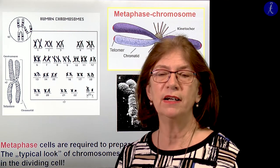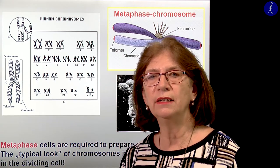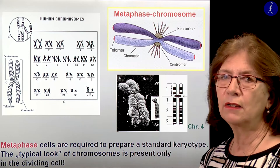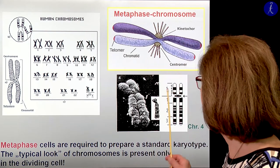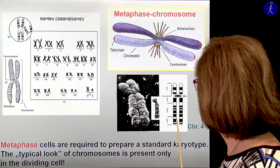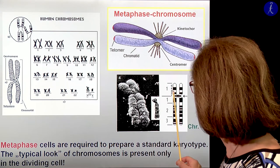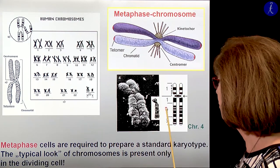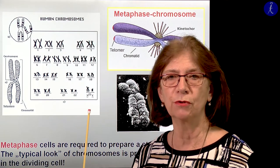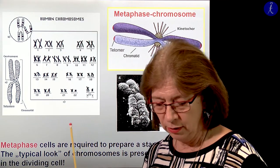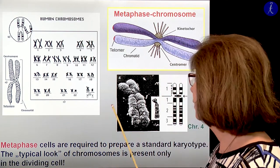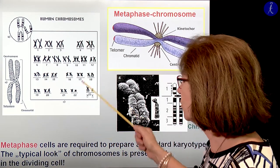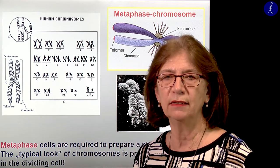Nowadays there are very sophisticated methods to determine the DNA sequence, used in medicine, archaeology, and many other ways. Previously there weren't such possibilities, so they used simple stainings, and based on the proportions of adenine, thymine, and so on, there were different shaded bands on the chromosomes, and that's how they could roughly tell whether something was wrong or not. Today of course there are more precise methods. But even today, the lack of a chromosome, an excess of a chromosome, or a missing part — a short arm of a chromosome — may be detected through a karyogram.